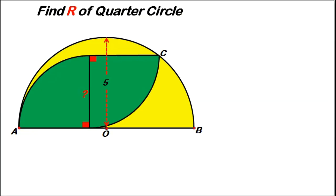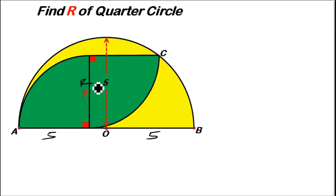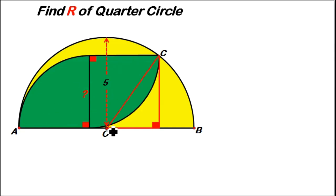If we transfer this problem to the whiteboard — to find the radius r of the quarter circle, we've been given the radius of the semi-circle as 5, meaning from point O to B is 5, and from O to A is also 5. Any line from the center to the circumference is the radius. So from O to point C is also 5, because it is from the center to the circumference — that radius is given to be 5.